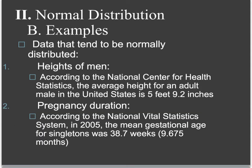Some examples of data that tend to be normally distributed: the heights of men — according to the National Center for Health Statistics, the average height for an adult male in the United States is 5 feet 9.2 inches, and from there it follows a normal bell curve. Another example is pregnancy duration — according to the National Vital Statistics System in 2005, the mean gestational age for singletons was 38.7 weeks, or 9.675 months.